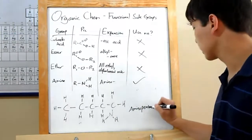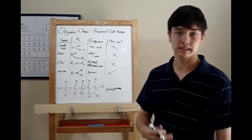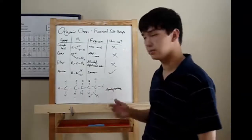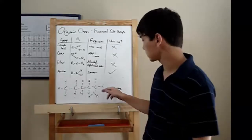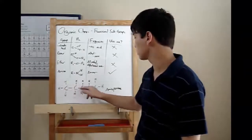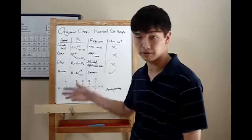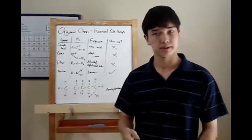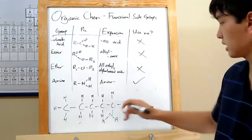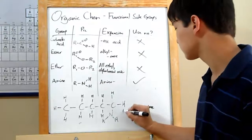Now, I put a check here in the use number column. Well, that means we need to use a number to indicate where our amine group is. Start by numbering the carbons at the ends, either one, two, three, four, five, or one, two, three, four, five. Then pick the one that gives you the lowest result. In this case, starting here will give us a one amino pentane. That's the way to go.